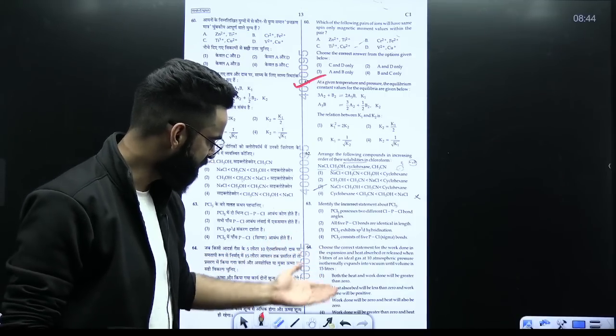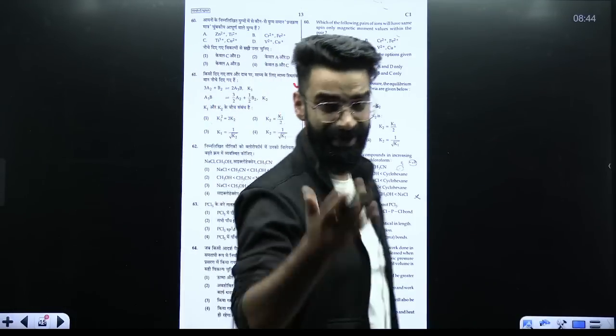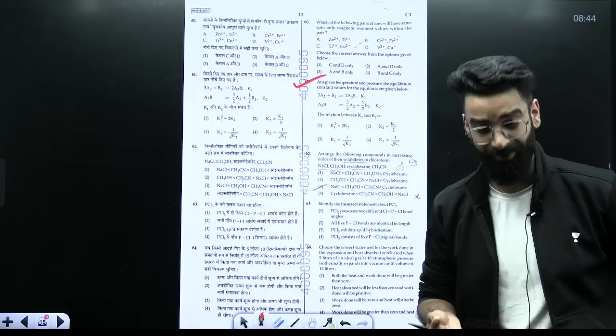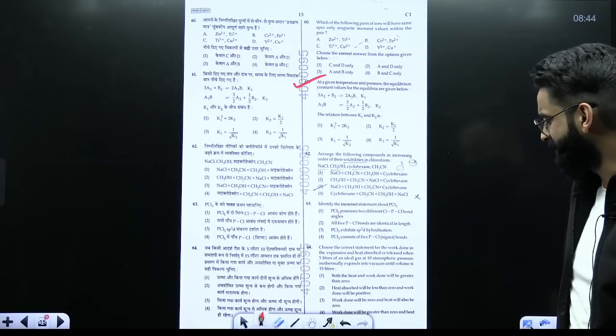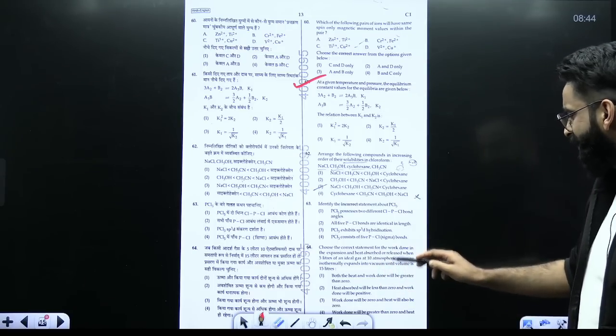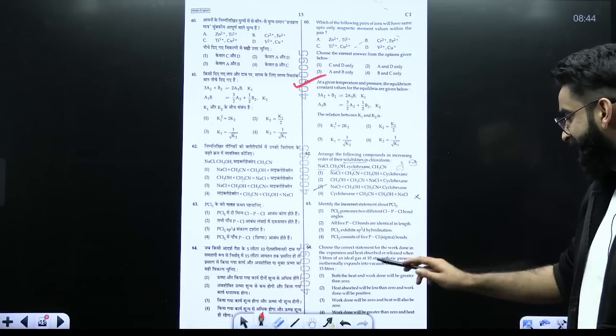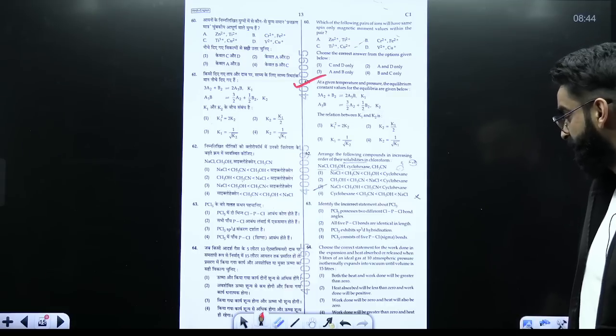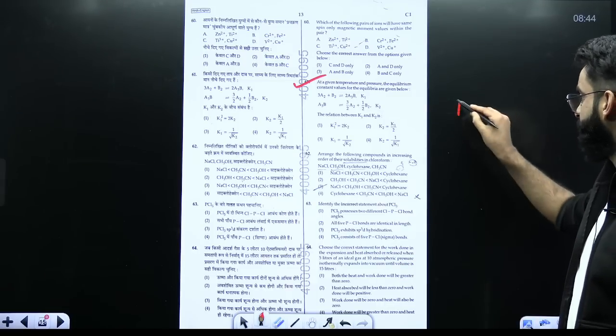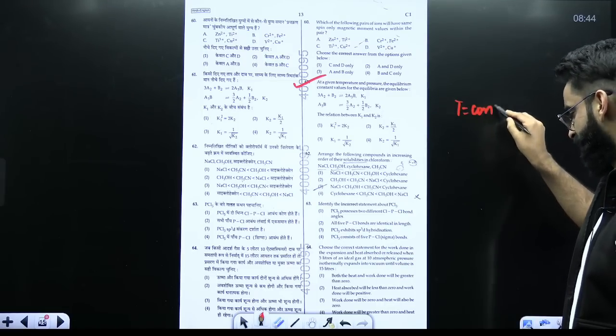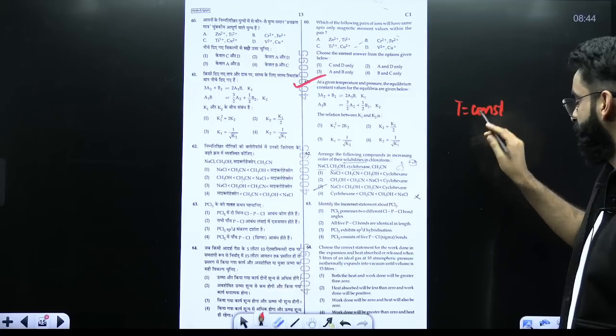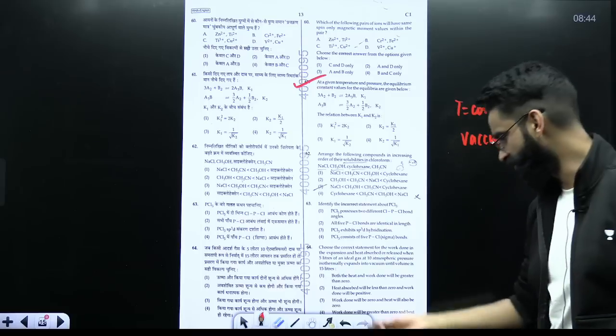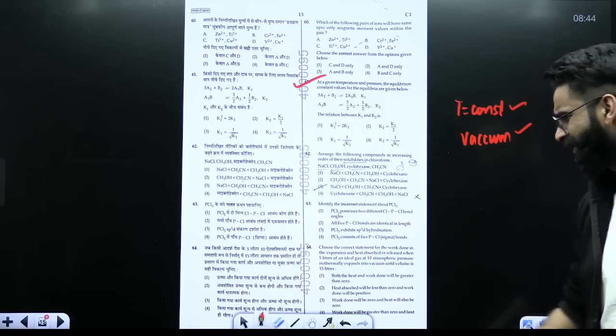Similarly, if you look at this particular equation, this is the question from the chapter thermodynamics. And I believe anyone who would have studied thermodynamics at least once, they would have solved this easily. Choose the correct statement for the work done in the expansion and heat absorbed or released when 5 liters of an ideal gas at 10 atmospheric pressure isothermally expands in vacuum. So this expansion in vacuum, it's free expansion. You have to check the statement. See guys, it's again a simple question.